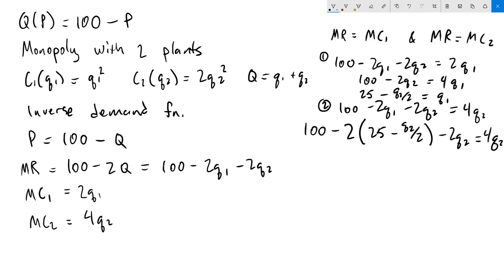I'll first distribute the 2 to get 100 - 50 + Q₂. Notice that I've distributed -2, the 2s have cancelled, and then the minus signs have also cancelled each other out to become a plus. So we have -2Q₂ = 4Q₂. Combining terms, we get 50 - Q₂ = 4Q₂. Adding Q₂ to both sides and dividing both sides by 5, we get Q₂ = 10.